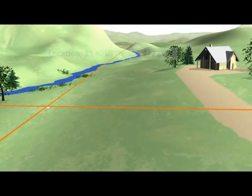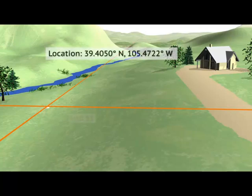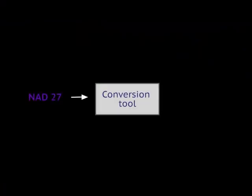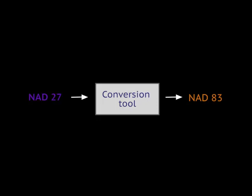Unfortunately, NAD83 and NAVD88 aren't the only datums you will encounter. Before the current datums were defined, many maps were created using different starting points, and even today people continue to change datums in an effort to make them more accurate. When combining data from different users or eras, it is important to transform all information to a common datum.